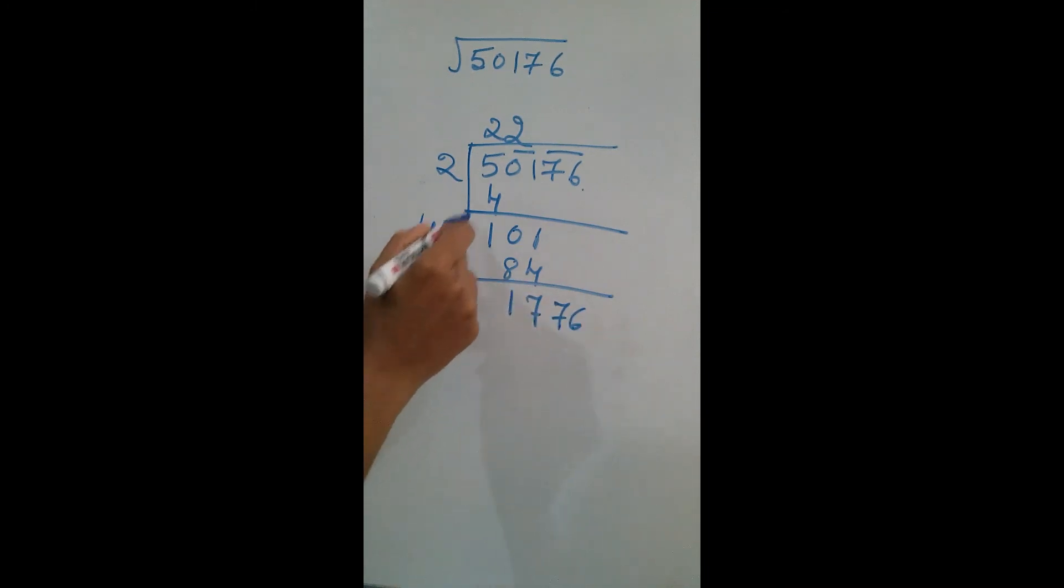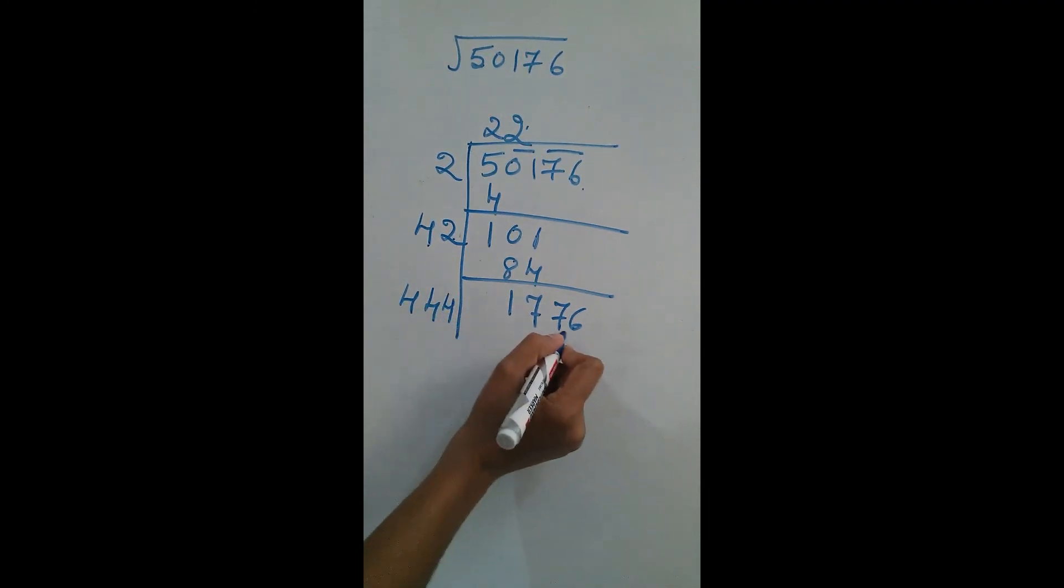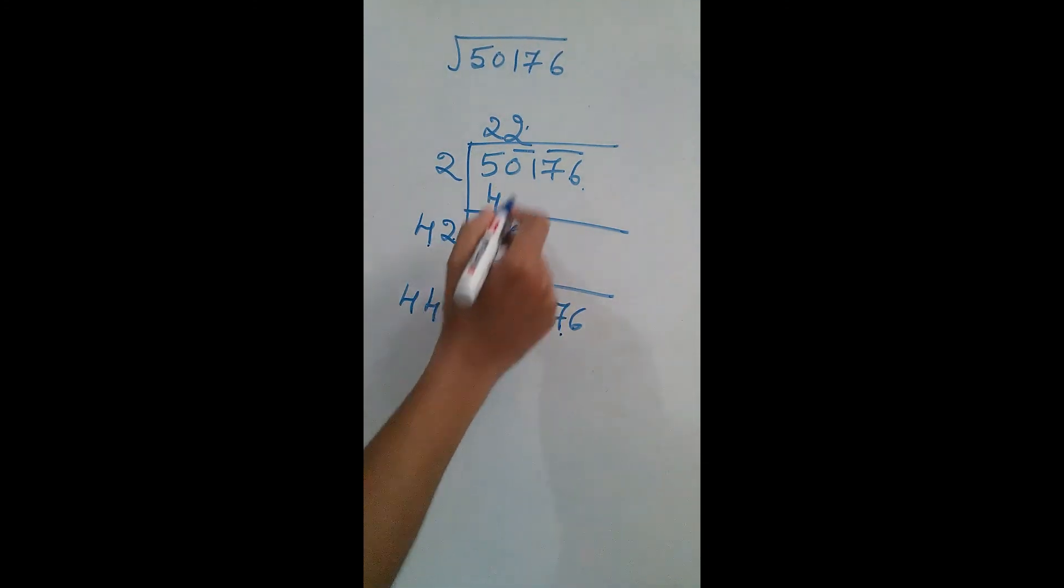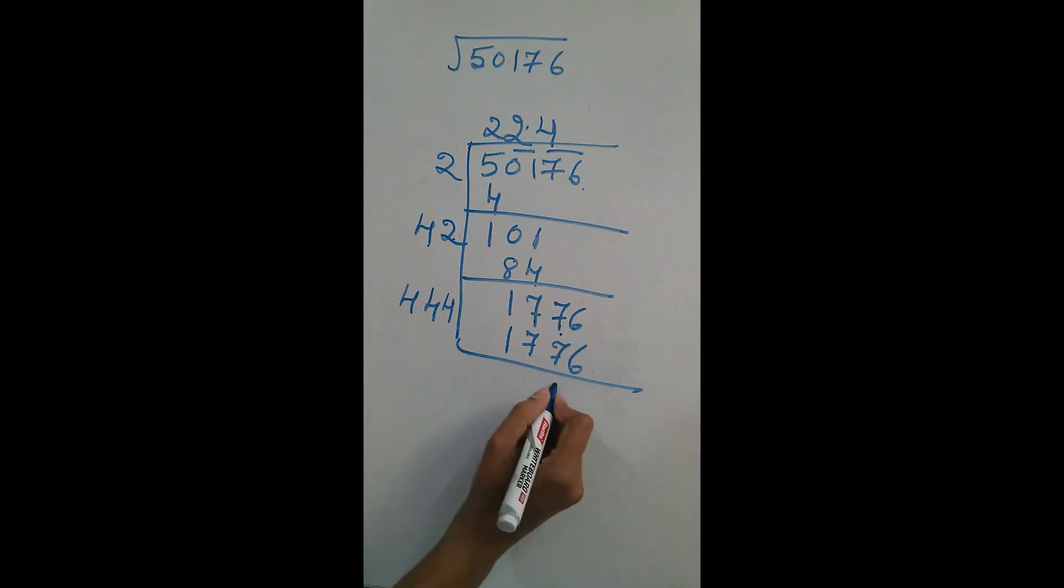I am adding 42 plus 2, that is 44. Now I am writing the number such that it will match this number or be less than that. 4. So it will be exactly the same as 1776. Subtracting, it will give 0 as a remainder.